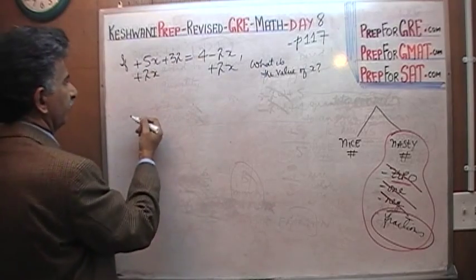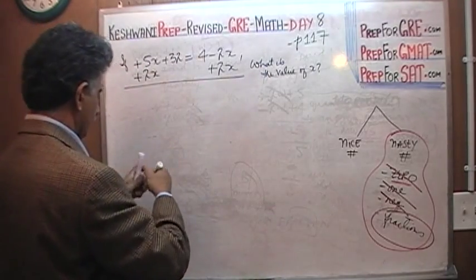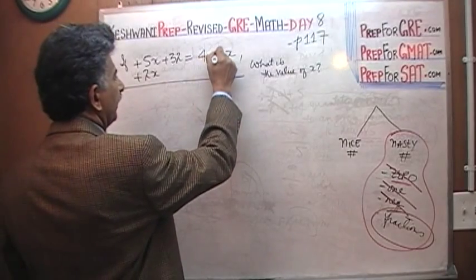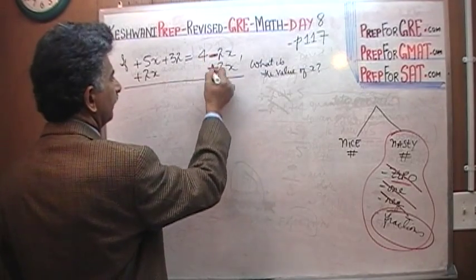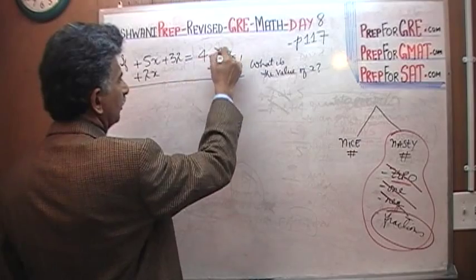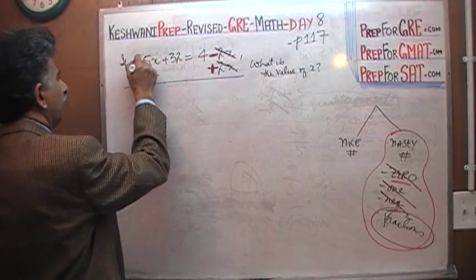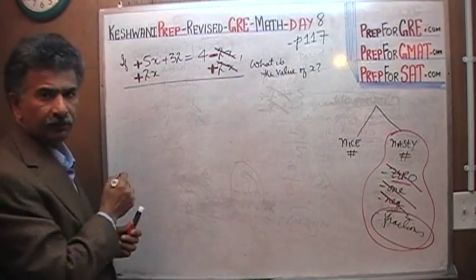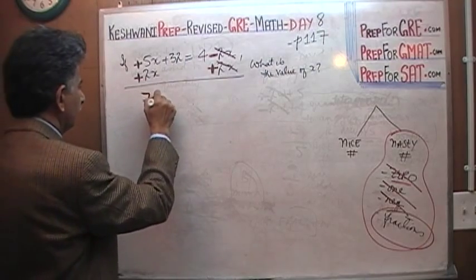Here we have positive 5x. So now we have a negative 2x and a positive 2x. Positive 2x and negative 2x will cancel out. Here we have positive 5x and positive 2x. That gives us 7x, positive 7x.